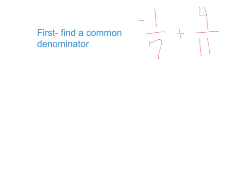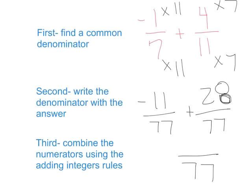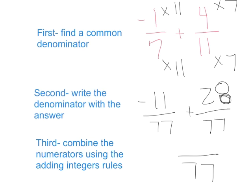So putting it all together, I'm going to first find a common denominator here. And since 11 and 7 do not have common factors, I am going to multiply 11 and 7 by each other. And I'm going to write the answer, or the denominator for the answer, which will be 77. And I'm going to combine the numbers in the numerator just like they are a typical integers problem. So negative 11 plus positive 28, they have different signs. So I subtract 28 minus 11 and I get 17. And so my final answer is 17 seventy-sevenths.